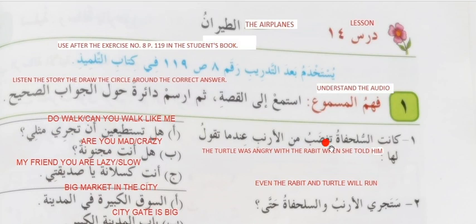Dear students, Assalamu alaikum warahmatullahi wabarakatuh. Peace be upon you. Home tutor is with you. We are going to start Lesson 14, Al-Tahran of Kitab al-Tadribat, Students Book 3. I divided it into two parts, A and B. So this is Lesson 14A. Durs means lesson.